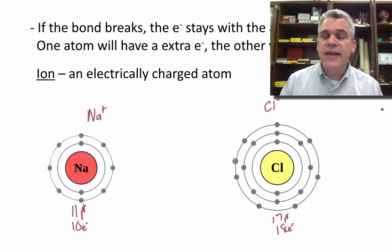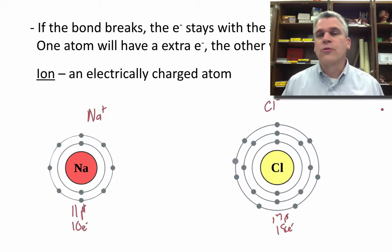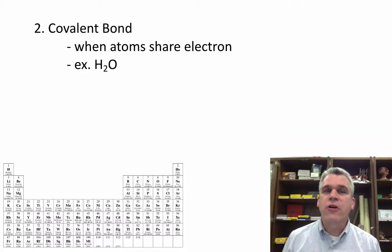How hard is it to break these ionic bonds? That's actually very simple. You just add water. You add water to salt, it dissolves. We separate sodium and chlorine into their individual ions. The second type of bond is called a covalent bond. Here, atoms will share their electrons.